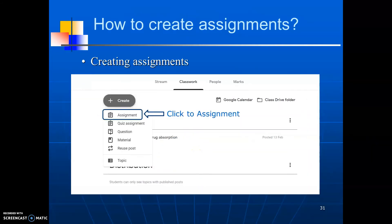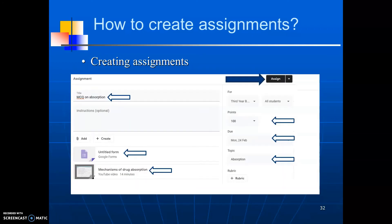Let us see how to create the assignment. To create the assignment, click to classwork. Then click on to create, which opens the pop-up and shows assignments, quiz assignments and questions. Click on to assignment. It will open the assignment page. Now, you can add the title to the assignment. Then write specific remarks in the instructions. Here, you can add specific course material by clicking to add. We can create a quiz in the form of Google Forms by clicking on to create. You can add MCQ questions in Google Forms and collect the responses in Google Sheets.